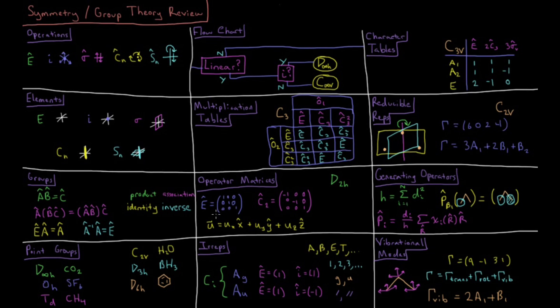So we get things like identity operators, which form identity matrices, and there are rotation matrices, reflection matrices, improper rotation matrices, etc.